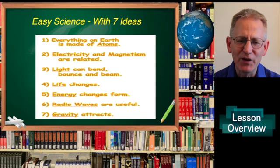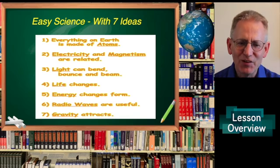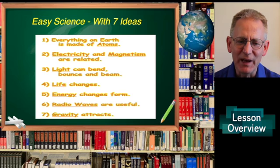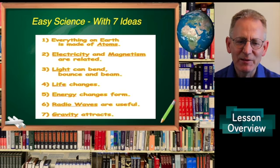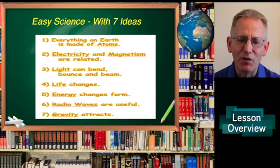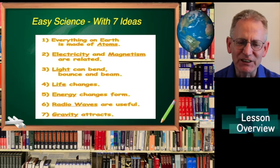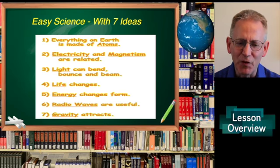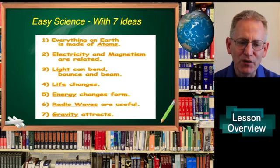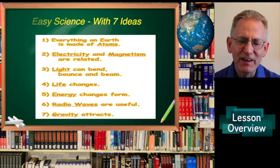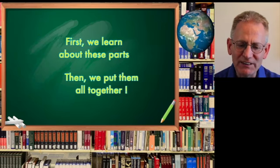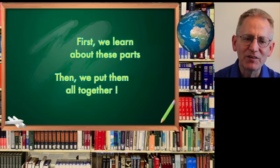Easy science with 7 ideas. Here's a lesson overview: Everything on earth is made of atoms. Electricity and magnetism are related. Light can bend, bounce, and beam. Life changes. Energy changes form. Radio waves are useful. Gravity attracts. First we learn about these parts, then we put them all together.